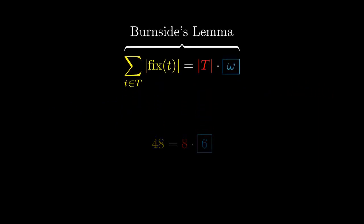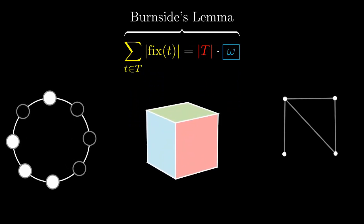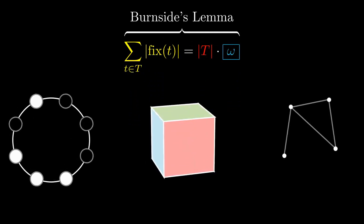This result is known as Burnside's Lemma. And it has broad applications in any case where you need to count colorings of objects that are the same under some symmetry group. For example, beads of a necklace, which has rotational symmetry,